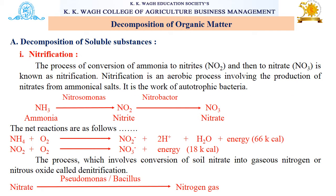After ammonification, the next process is nitrification. Nitrification is the conversion of ammonia to nitrite and then to nitrate. It is an aerobic process which involves the production of nitrates from ammoniacal salts. Ammonia is converted into nitrite by the action of Nitrosomonas, and this nitrite is further converted into nitrate by the action of Nitrobacter.